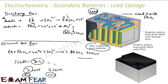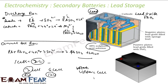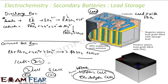Since the lead storage battery can be recharged, during discharge it acts as a galvanic cell — a source of energy. During charging, it acts as an electrolytic cell, with the reaction being reversed.